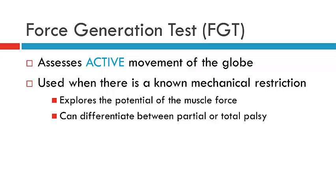As an example, there are instances where we may have an abduction deficit — say the right eye cannot abduct. It's possible that is caused by a neurogenic palsy of the lateral rectus, or it could be caused by a mechanical restriction of the medial rectus. If the medial rectus has undergone contracture, the lateral rectus is actually unable to abduct because of that contracture. A force generation test would assist us in examining that lateral rectus and determining its potential function.